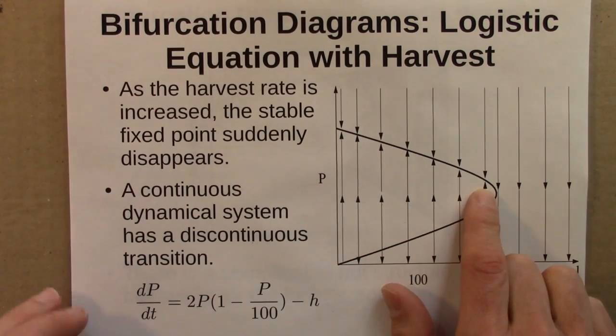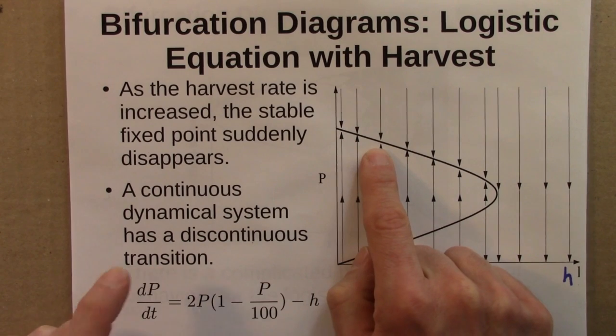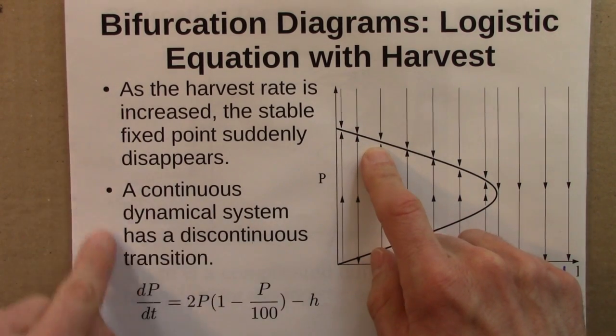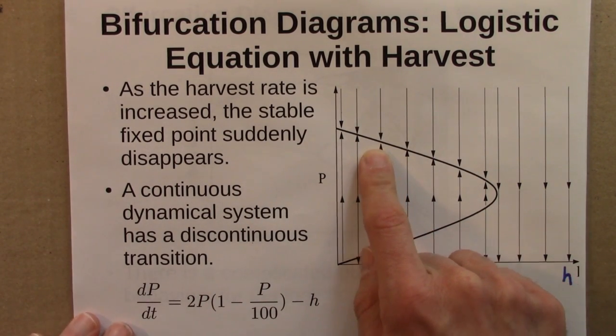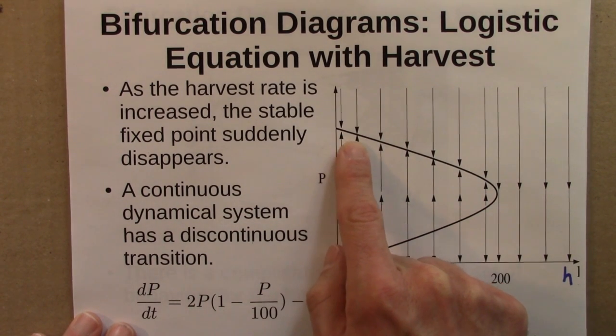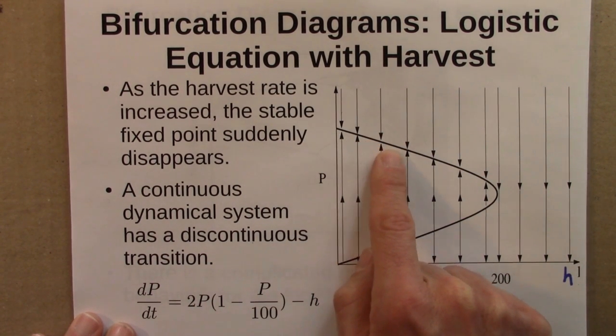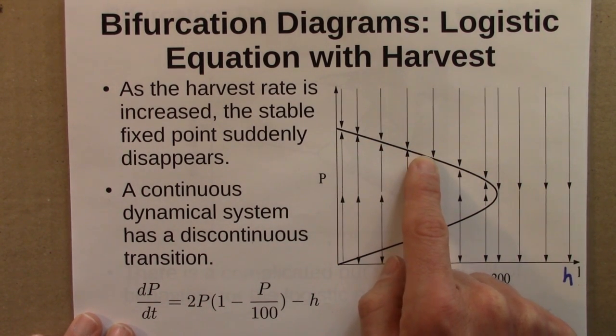And what's interesting about this is that, so this is the stable fixed point. This would be the stable population of, the story I told involved fish in a lake or an ocean. And h is the fishing rate, how many fish you catch every year. And that increases, and as you increase h, the sort of steady state population of the fish decreases. That makes sense.